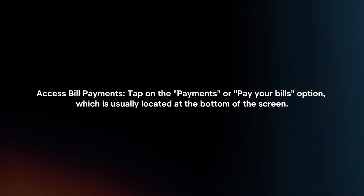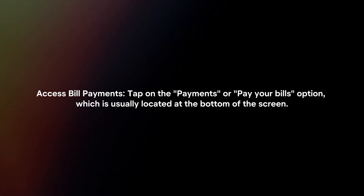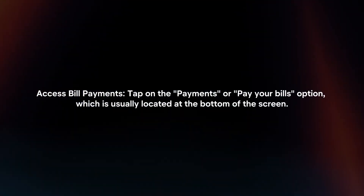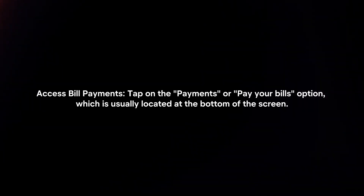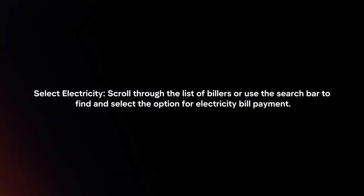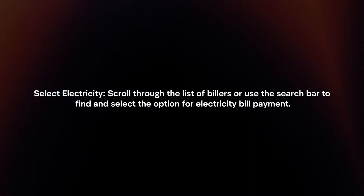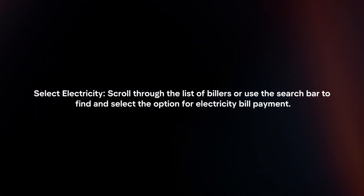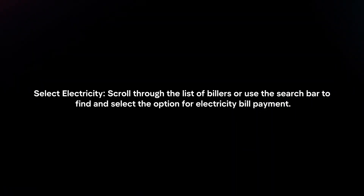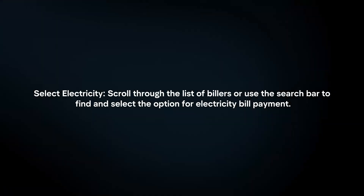Access bill payments: tap on the payments or pay your bills option, which is usually located at the bottom of the screen. Select electricity: scroll through the list of billers or use the search bar to find and select the option for electricity bill payment.